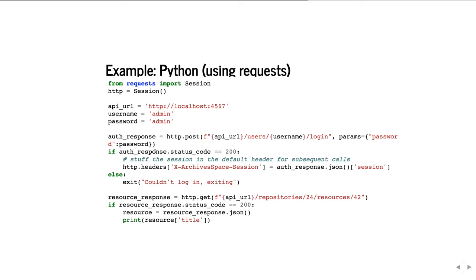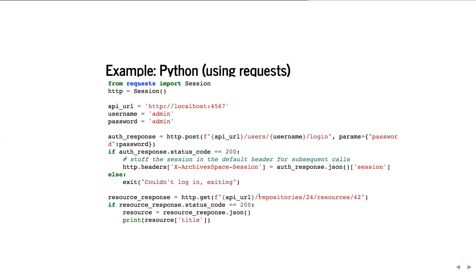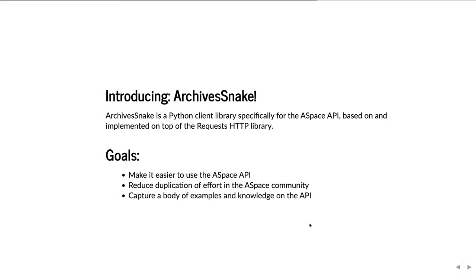If the auth response status code is 200, that means everything went okay. We put the session into the default header for the HTTP session so it'll be added to every subsequent request. The session lives in a key in the JSON returned by this HTTP POST call. If it doesn't work, we bail out. Then we make an HTTP GET request to /repositories/24/resources/42 and if successful we get the resource JSON and print out the title. That's a fair amount of work to get one thing out of ArchivesSpace.